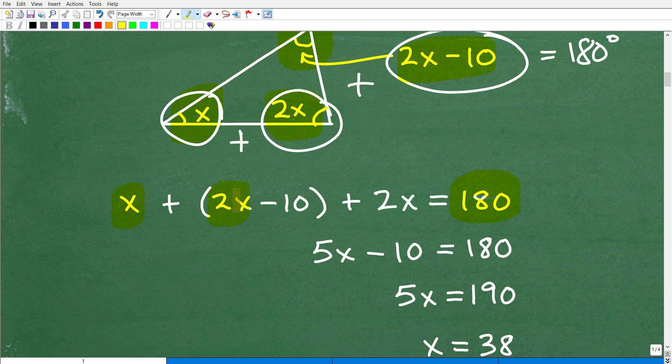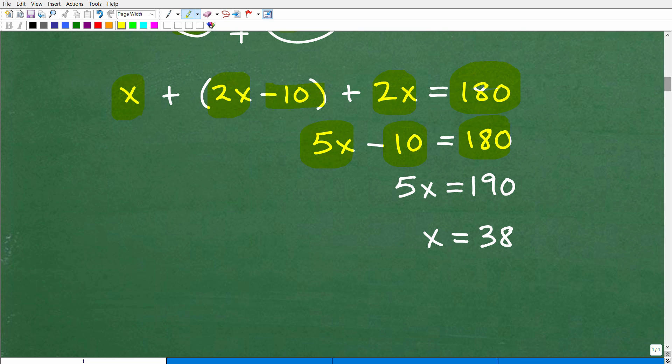So I have an x, a 2x here, and a 2x here. So 2x and 2x, that's 4x. Plus another x, that's 5x minus 10, is equal to 180. So what do I do next? Well, I'm going to go ahead and add 10 to both sides of the equation. I don't show that step. You can kind of see that here.